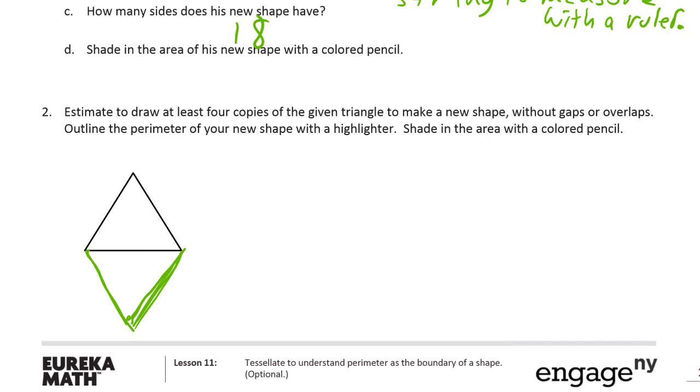All right, so that's one and then another one. These are equilateral triangles. So you can think about this like the green triangles with the pattern blocks. If you have six of those, you can make a hexagon, right? But this one we're just going to make a new shape without gaps or overlaps.